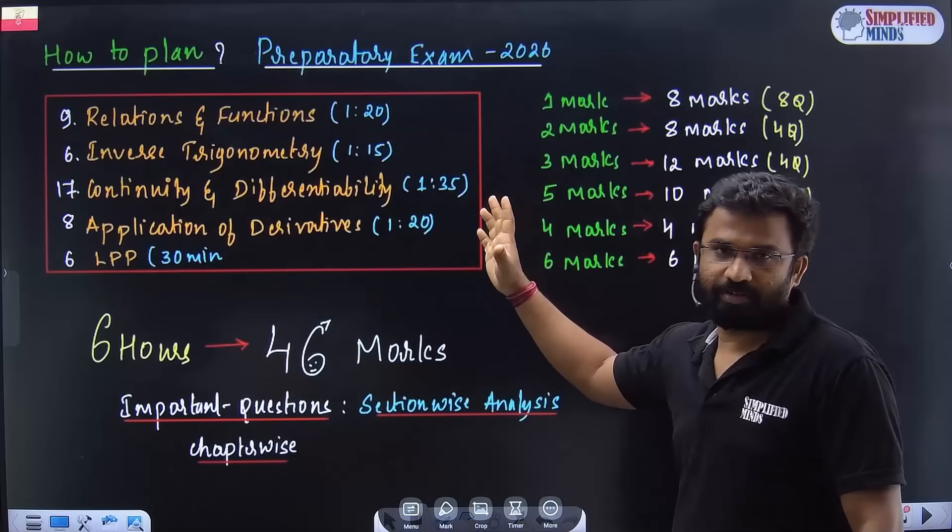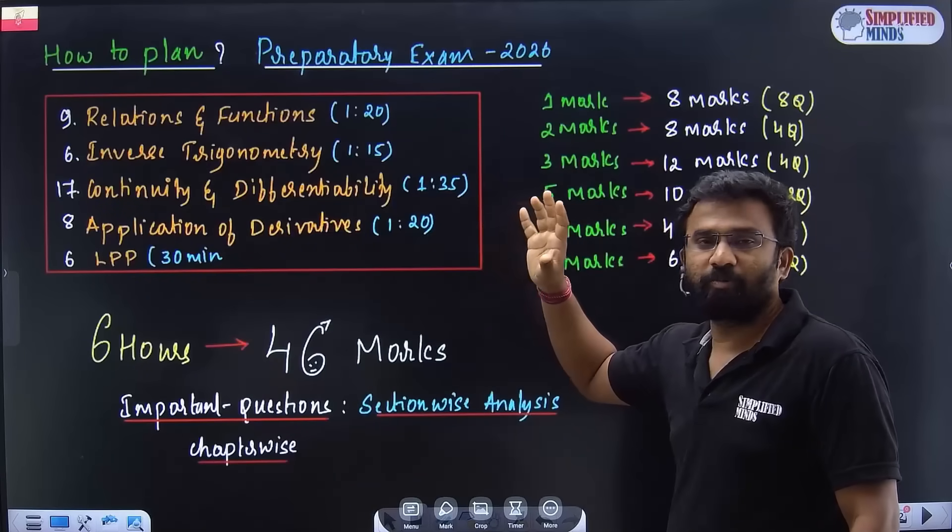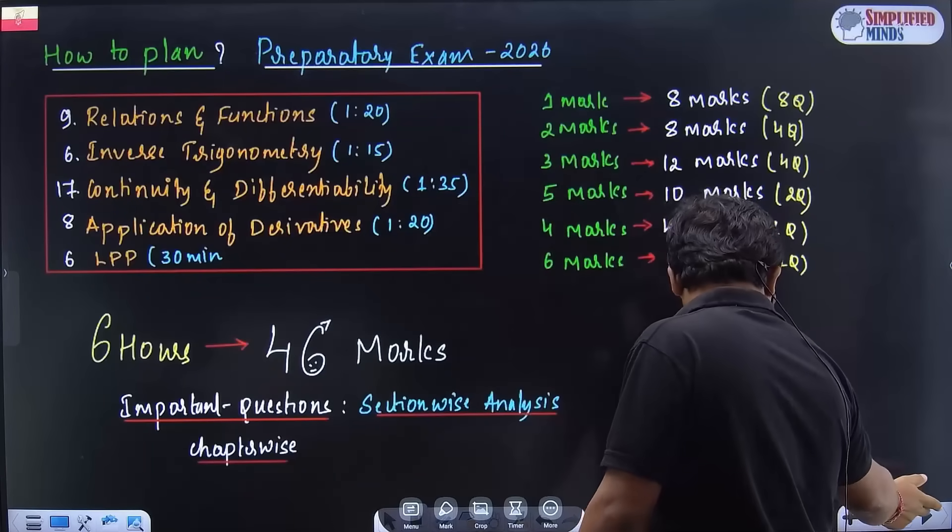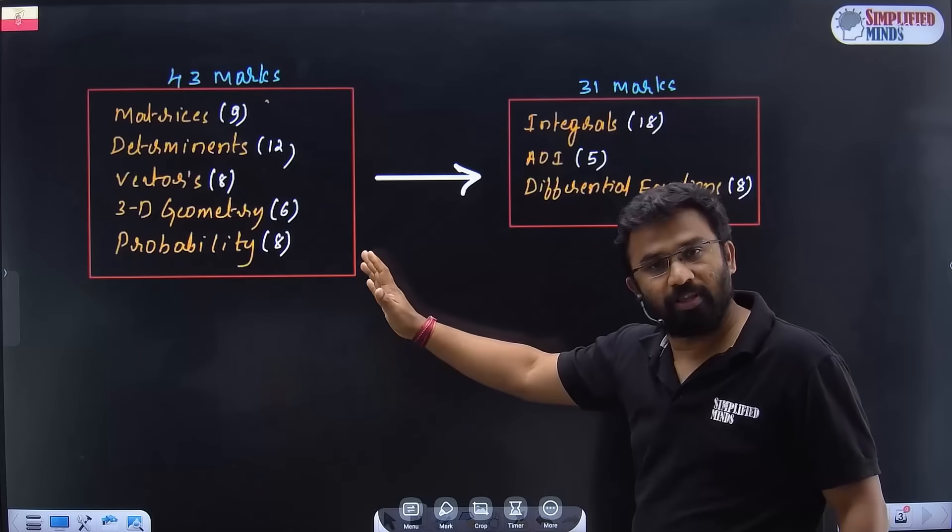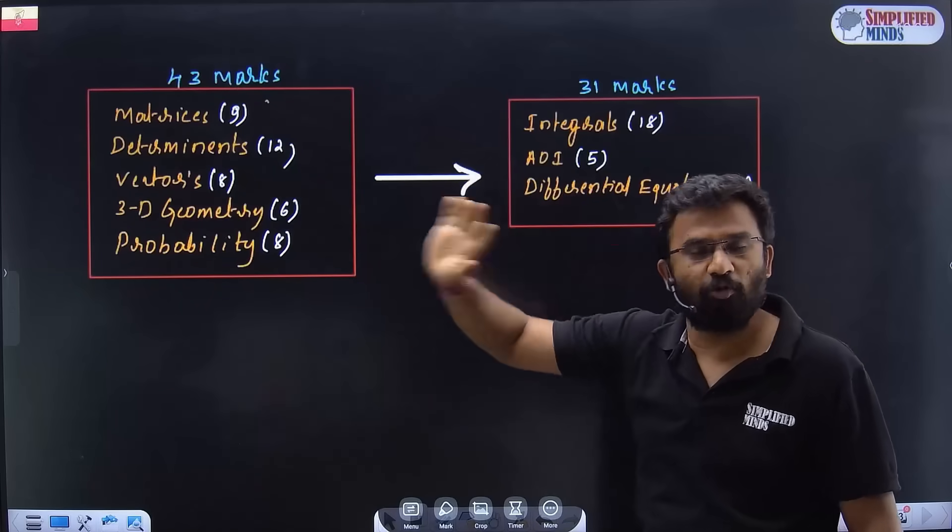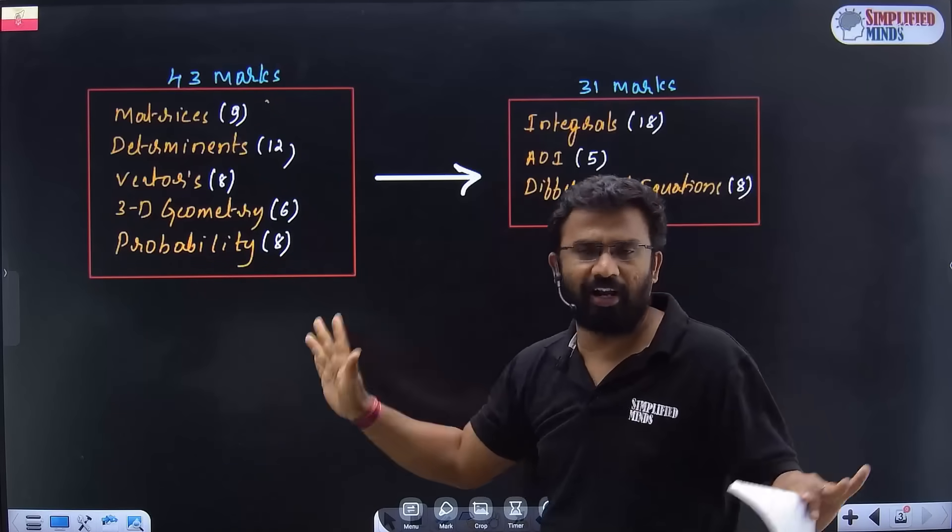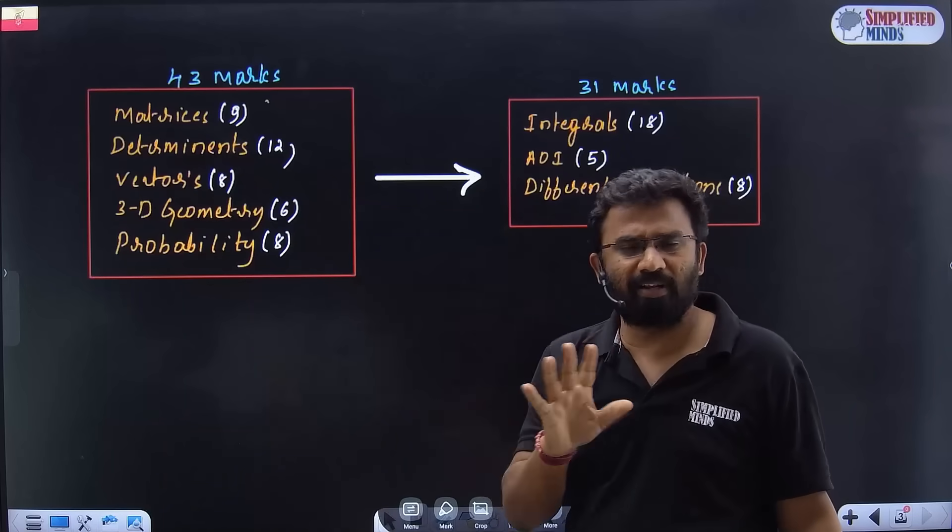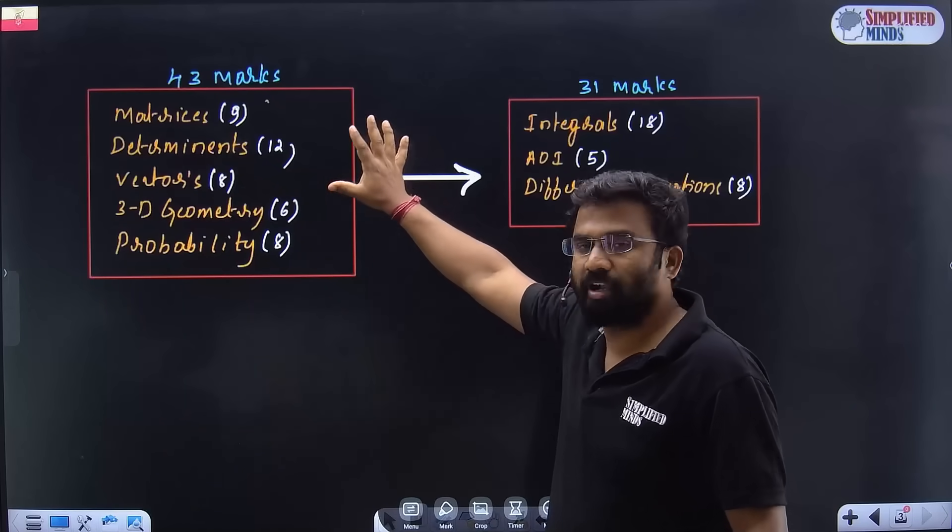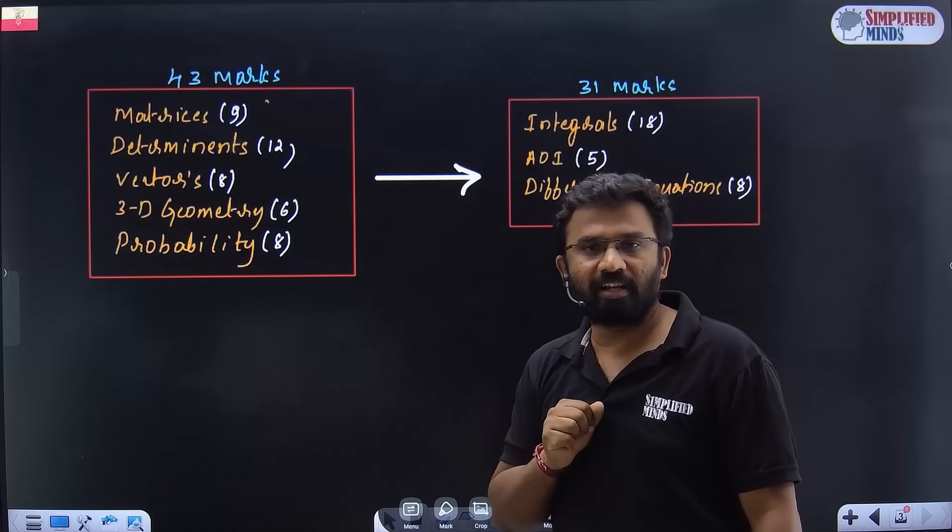Make sure these five chapters at any cost you should prepare 100% along with Matrices and Determinants. With this you are already 75% plus. Time will be a tough factor. You can skip these chapters completely. You may miss some one mark or something like that, but majority will be covered everything here.